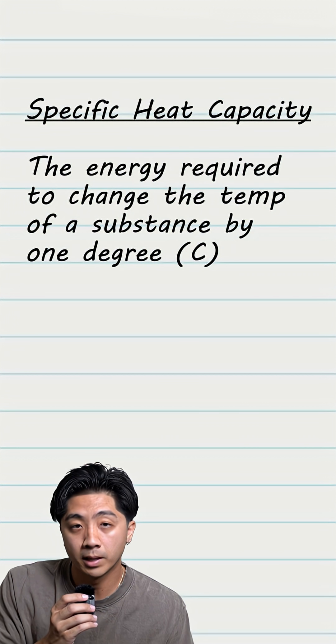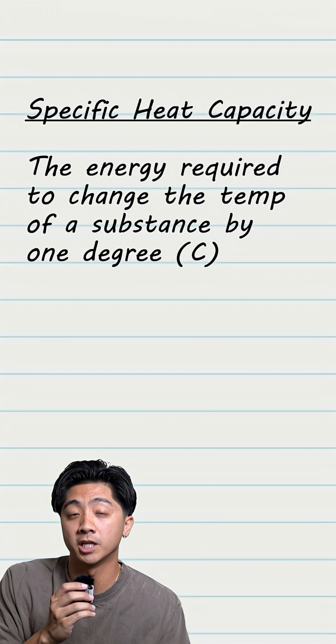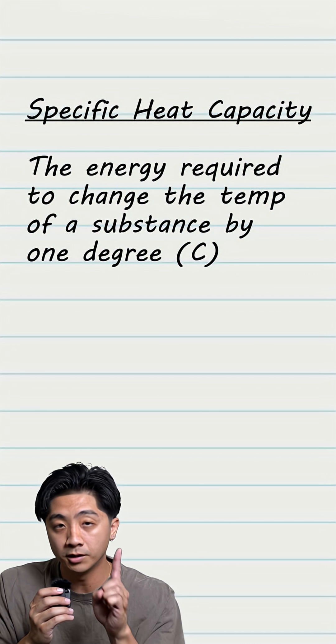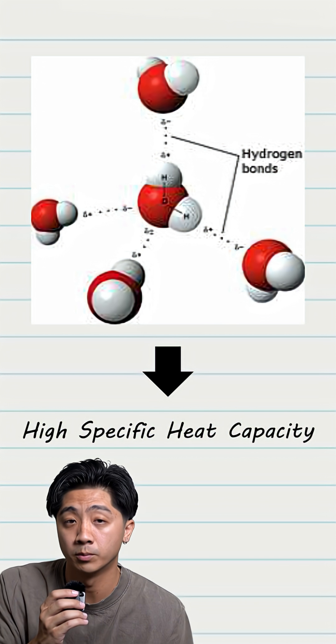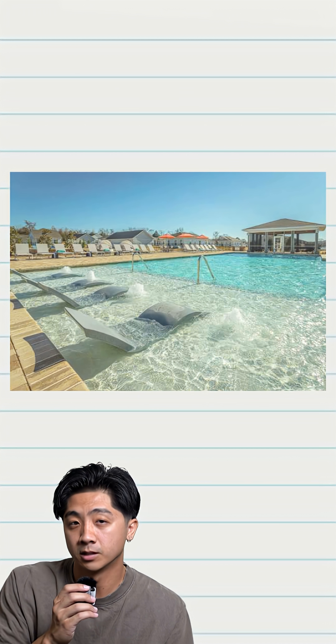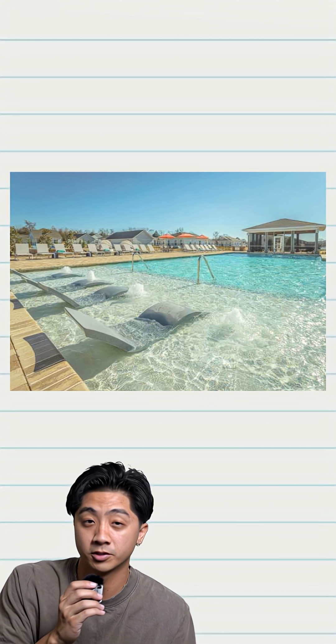Specific heat capacity refers to the energy required to change the temperature of a substance by one degree. Water has a high specific heat capacity due to the hydrogen bonds that form, and you might have observed this at the pool, where the ground is hot but the water is still cold.